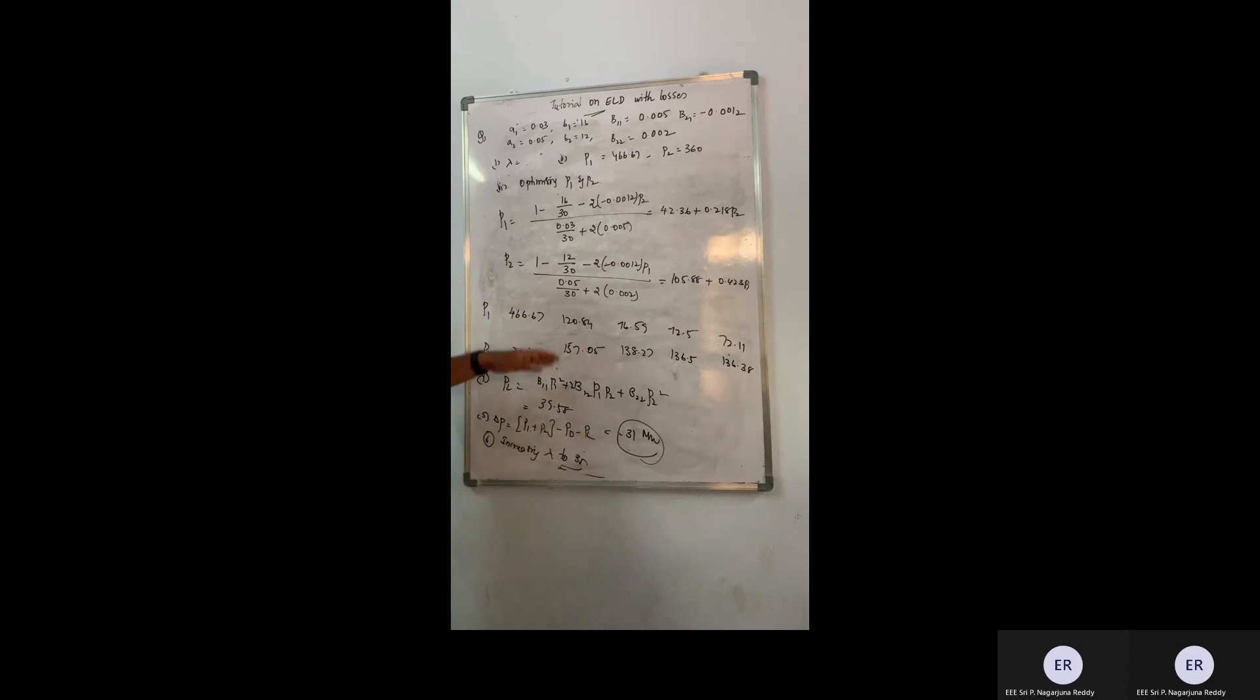I am changing the initial value of lambda 30 to 35 now. Now let's again start the process with lambda is equal to 35 now. So let's see how this is going to work for us.